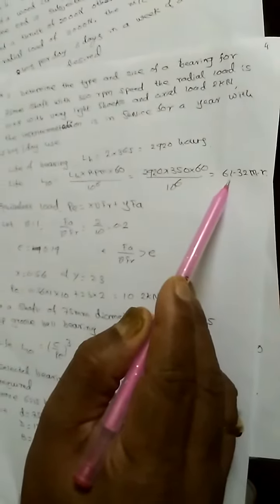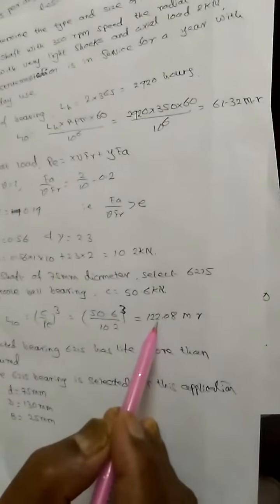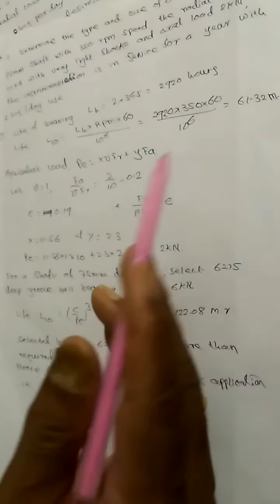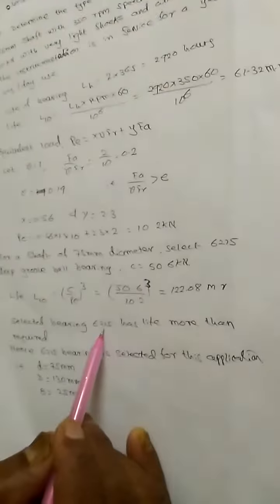Whereas, the required life of the bearing is 61 only. Therefore, the chosen bearing has a higher capacity than what is required. Therefore, this bearing is going to be suitable.